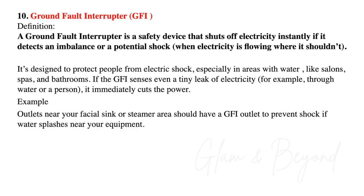Number ten, ground fault interrupter. A ground fault interrupter is a safety device that shuts off electricity instantly if it detects an imbalance or a potential shock — basically when electricity is flowing where it shouldn't. It's designed to protect people from electric shock, especially in areas with water like salons, spas, and bathrooms. If the GFI senses even a tiny leak of electricity, for example through water or a person, it immediately cuts the power. Outlets near your facial sink or steamer area should have a GFI outlet to prevent shock if water splashes near the equipment.